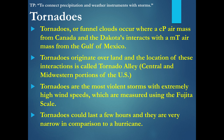Tornadoes are funnel clouds. Tornado alley is the central part of the U.S., where differences in air masses create tornado conditions — specifically, continental polar (CP) air, which is very dry and cool, meets warm, moist maritime (T) air masses. These are the most violent storms we have. We use the Fujita scale for tornadoes, not the Saffir-Simpson scale. Unlike hurricanes that can last a week, tornadoes only last a few hours or even just a few minutes — very short.